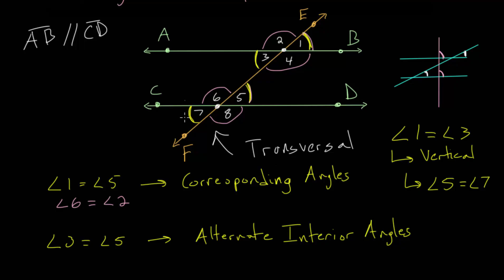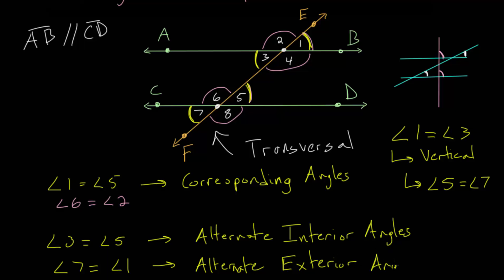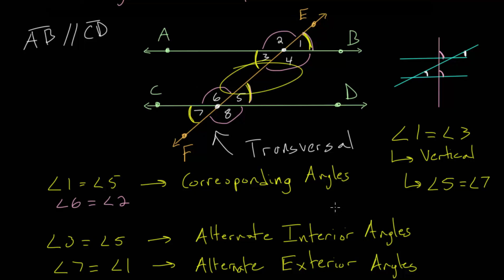We also have alternate exterior angles, and those are equal as well. An example would be angle 7 and angle 1. These are called alternate because they're on opposite sides of the transversal, and exterior because they're on the outside of the parallel lines — on the top and bottom rather than the inside, which is the interior.